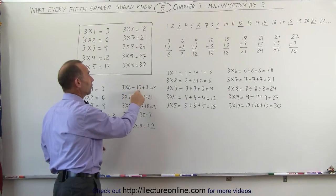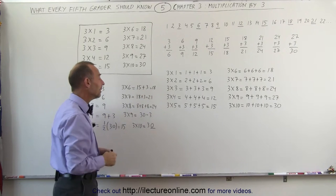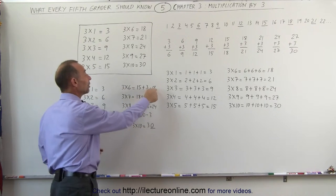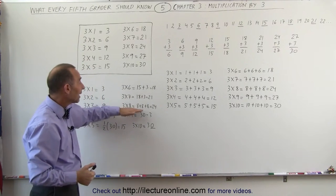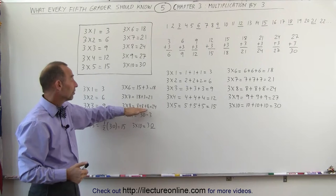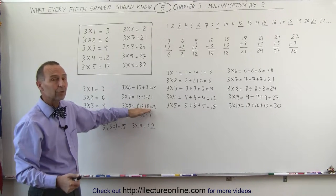3 times 6 is the halfway answer, 15, add 3 to it, you get 18. And 3 times 7, you get the previous answer, add 3, you get 21. And 3 times 8, you can look at it as adding 3 eights together. 8 plus 8 is 16, add another 8, you get 24.